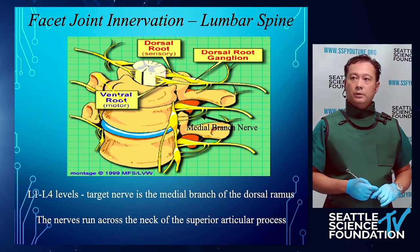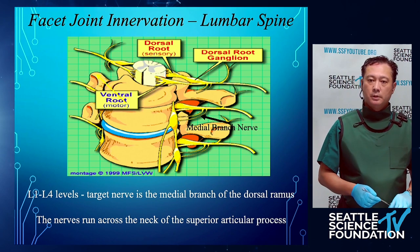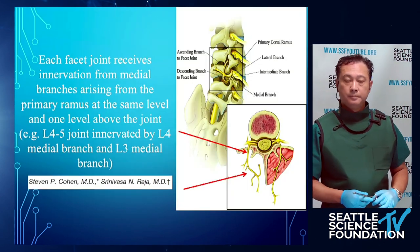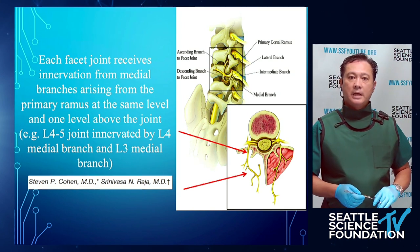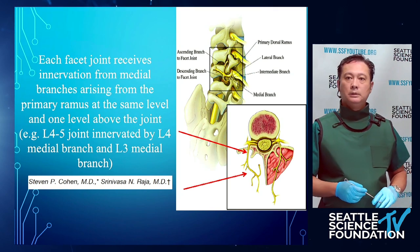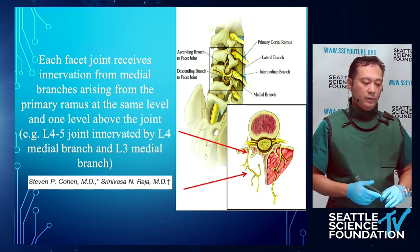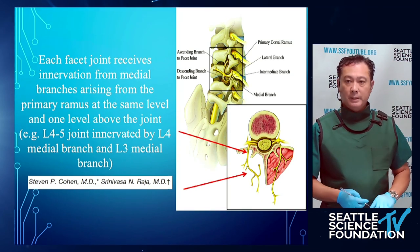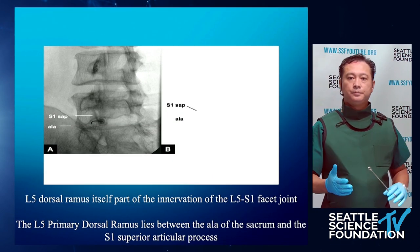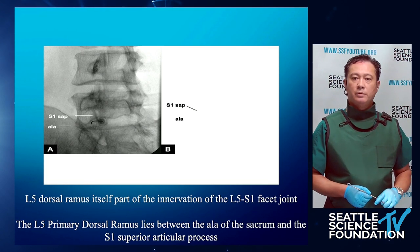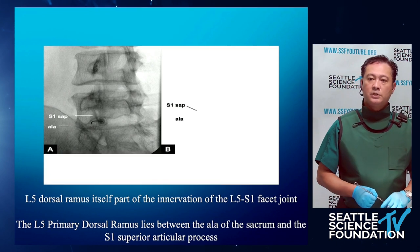Regarding innervation of facet joints — coming off the dorsal root ganglion, we get the medial branches. L1 to L4: the target nerve is the medial branch of the dorsal ramus, and the nerves run across the neck of the superior articular process. Each facet joint receives innervation from medial branches arising from the primary ramus at the same level and one level above the joint. For example, the L4-5 joint is innervated by the L4 medial branch and also the L3 medial branch — something you'll often see in board exam questions. The L5 primary dorsal ramus nerve lies between the sacral ala and the S1 superior articular process.